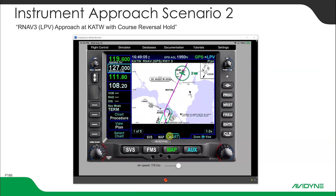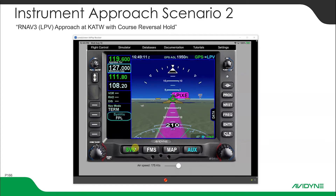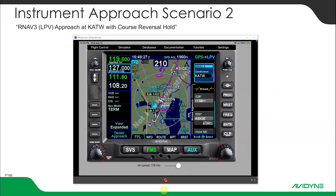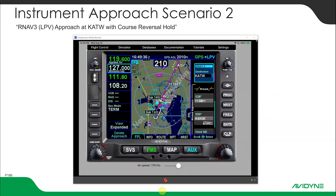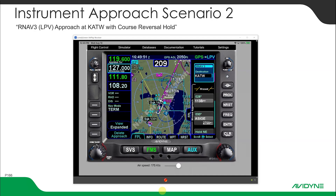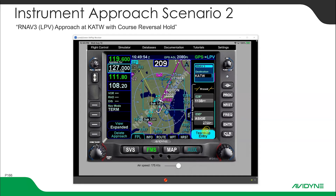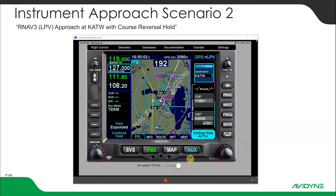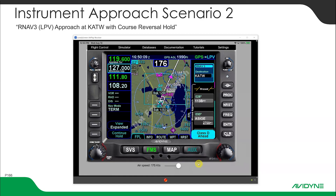I'm flipping through these tabs — first person, CINVIS, there's Apixi. Going back to FMS. We're coming up on Apixi. It's a teardrop entry into that course reversal. Notice it's telling us we're going to exit the hold at the fix because this isn't actually a hold — it's just a course reversal.